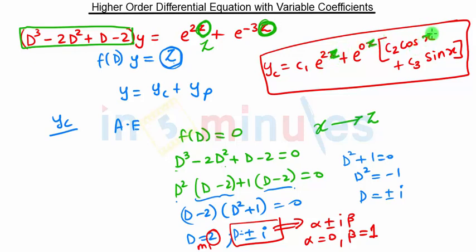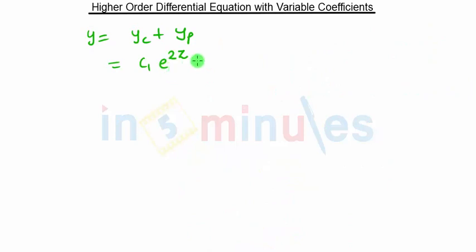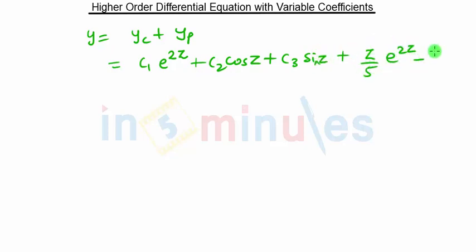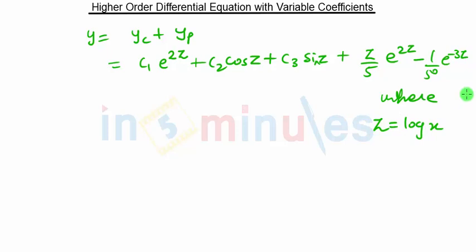The yc terms are e raised to 0z, cos z, and sin z — in z, not x — because we substituted z equal to log of x. So yc and yp are both in terms of z. The final solution is: y equals c1 e raised to 2z plus c2 cos z plus c3 sin z plus z over 5 into e raised to 2z minus 1 upon 50 into e raised to minus 3z, where z equals log of x.